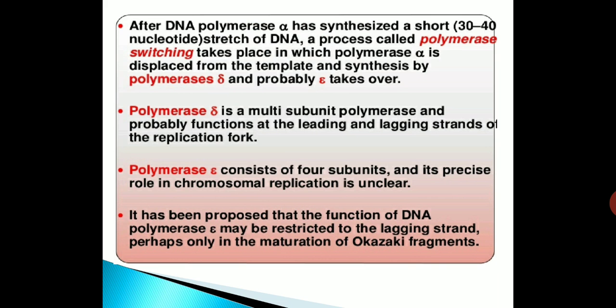Polymerase delta is a multi-subunit polymerase and probably functions at both the leading and lagging strands of the replication fork. It has been proposed that the function of DNA polymerase epsilon may be restricted to the lagging strand, perhaps only in the maturation of Okazaki fragments.